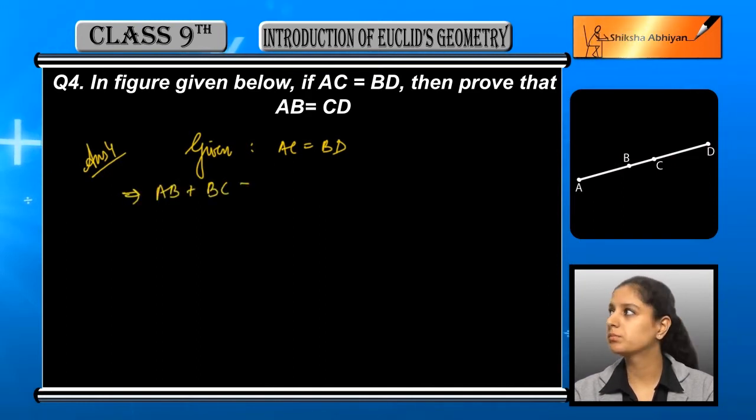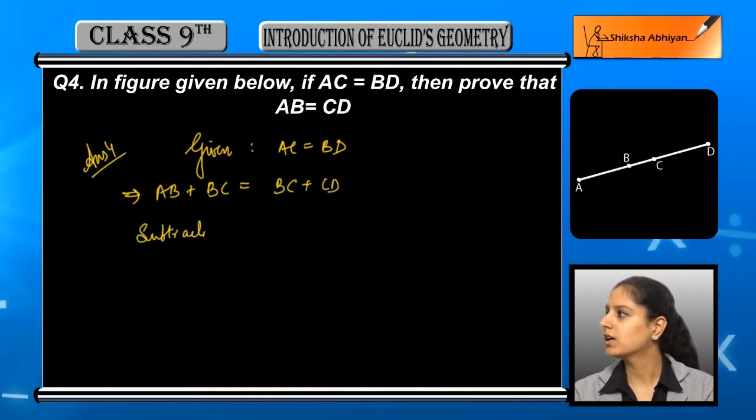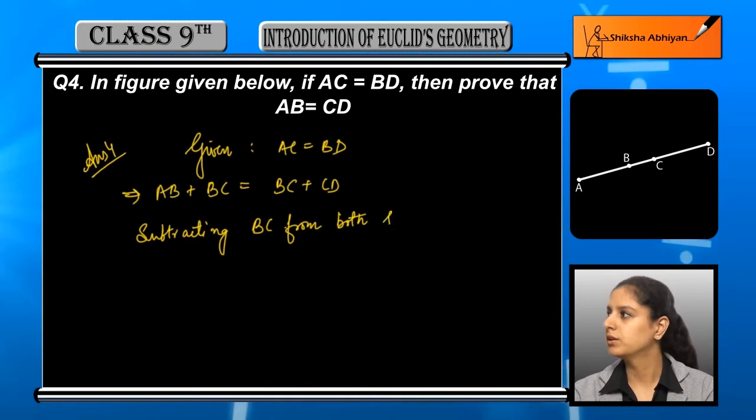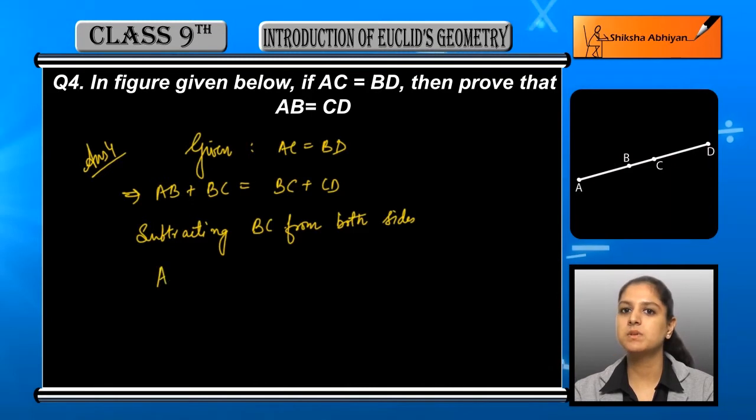We will break the points AC and BD. So we will have AB and BC, and BC and CD. Now we will have AB plus BC minus BC.